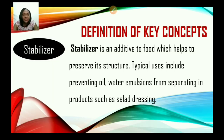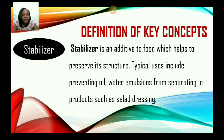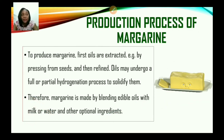Now let us look at stabilizers. A stabilizer is an additive to food which helps to preserve its structure. After the emulsion takes place, a stabilizer is added to help keep the structure together. Typical uses include preventing oil-water emulsions from separating in products such as salad dressing or margarine.